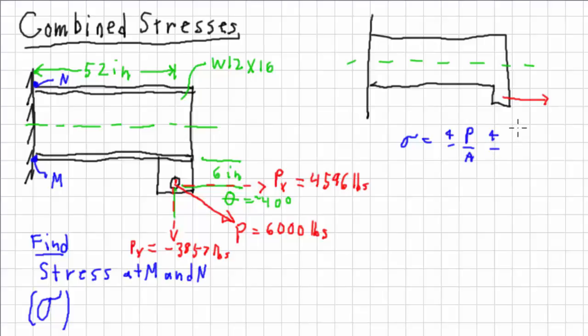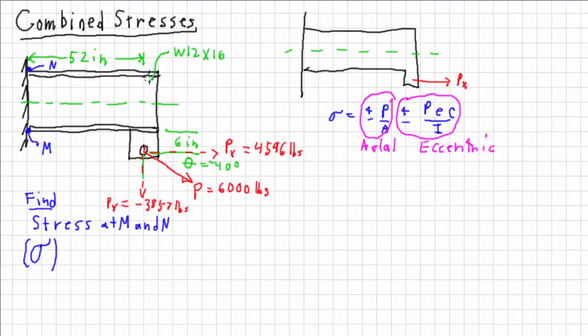Stress equals plus or minus force over area plus or minus the force times E, the eccentricity, times C, the distance from the neutral axis to the outermost fiber, conveniently where N and M are, all divided by the area moment of inertia. These are the two types of stresses that PX gives us. This here is as if it were axial, right along the axis. And this here is the eccentric.